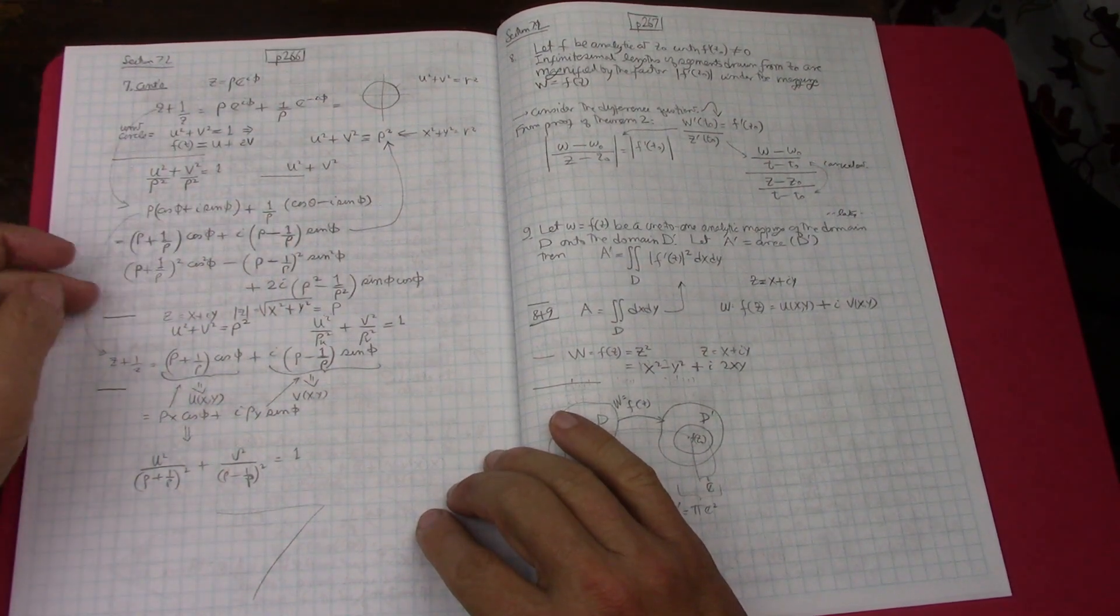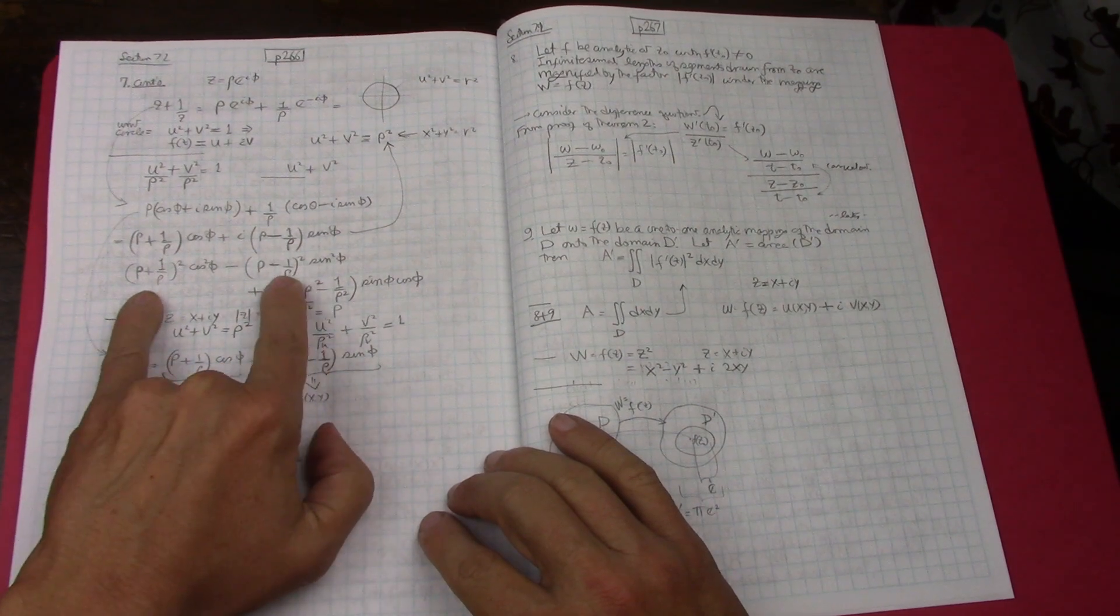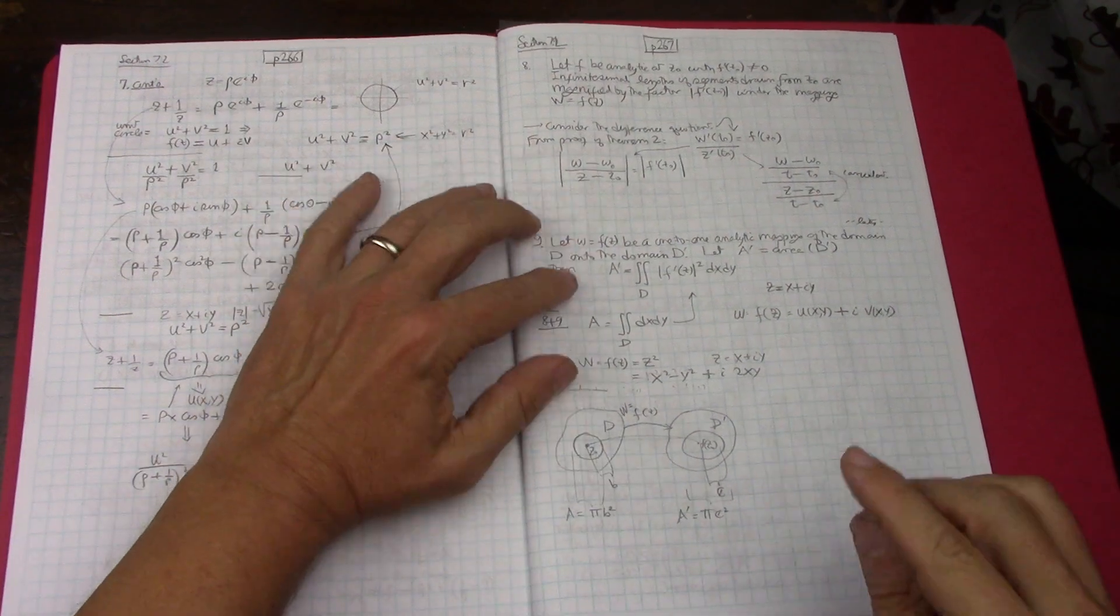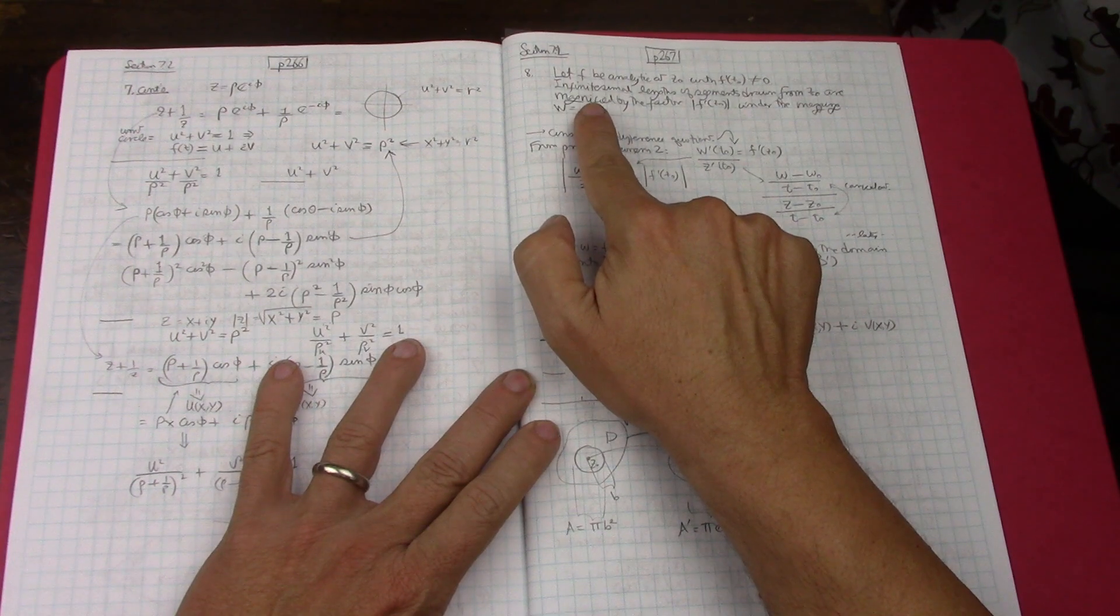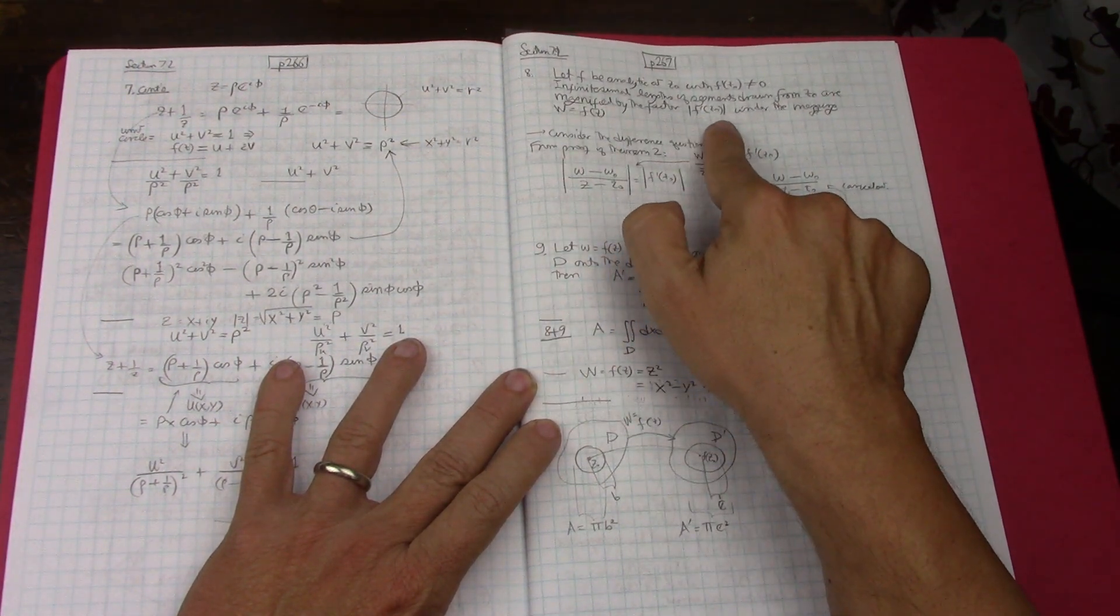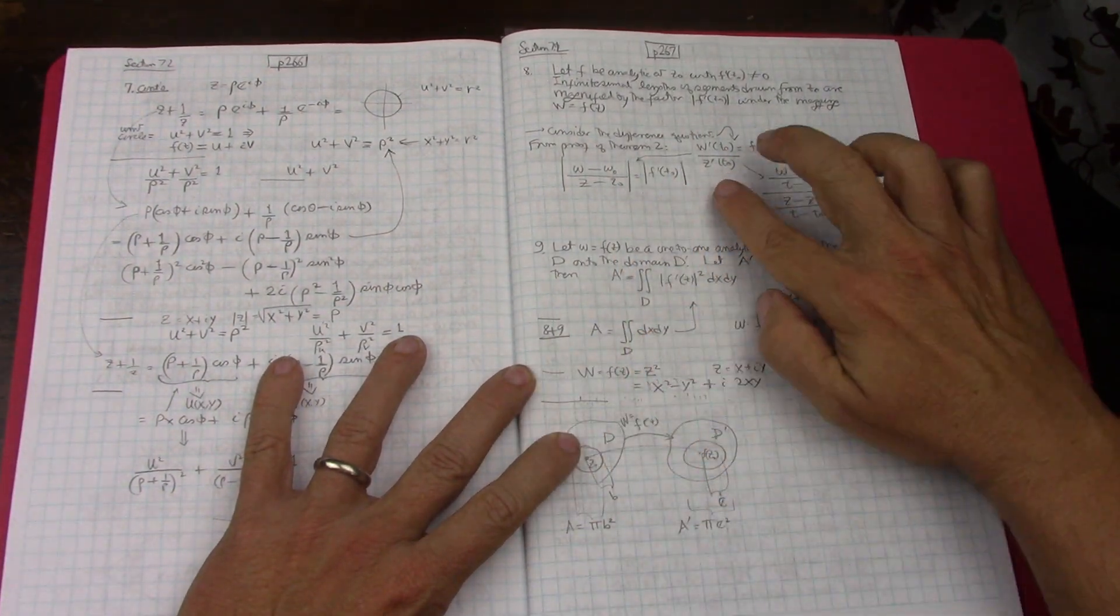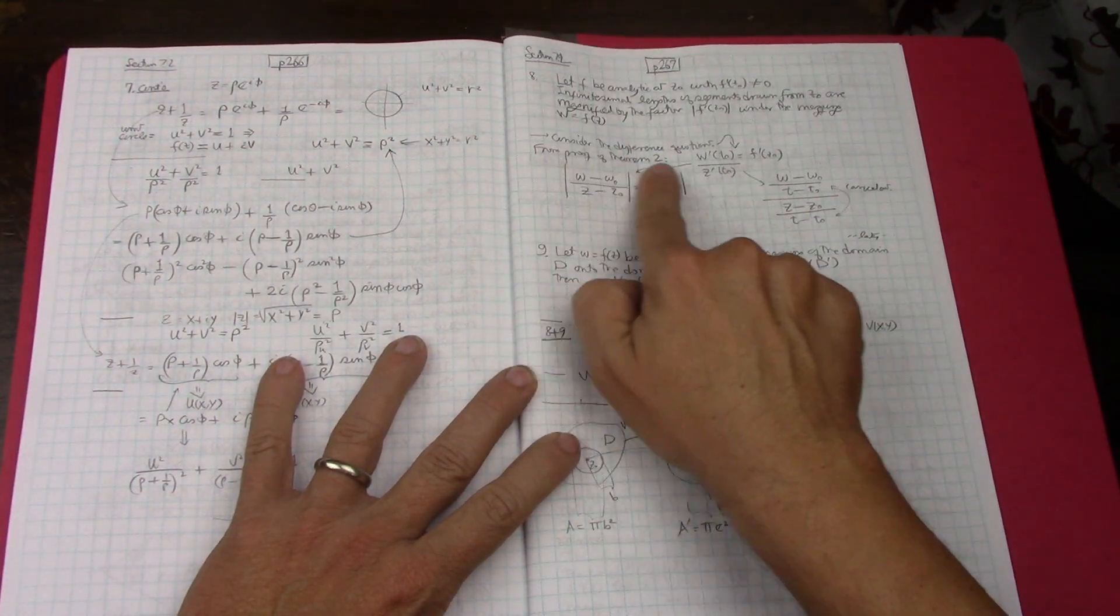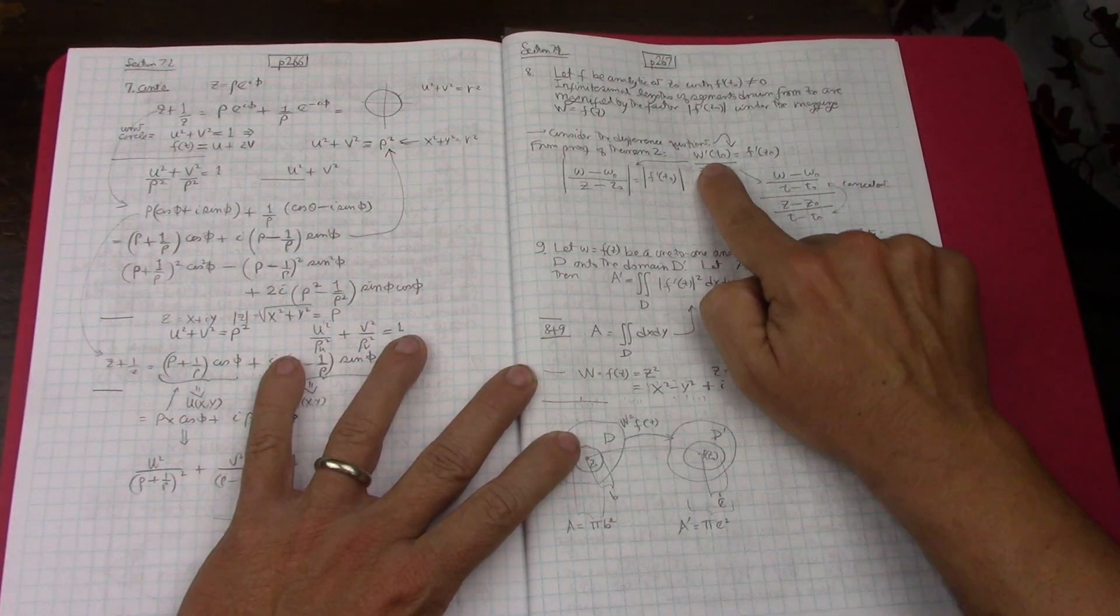Then when I got to yeah problem seven I got right the ellipse problem yeah you just you break out you do a parameter you do you parametrize to polar coordinates and then when you break them out you do get the rho plus one over rho minus one over rho I see where it comes from. Then when I hit problems eight and nine which come in a pair problem eight is what happens with infinitesimal lengths and the magnitude of the derivative.